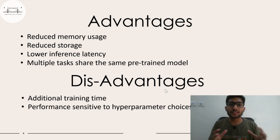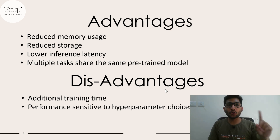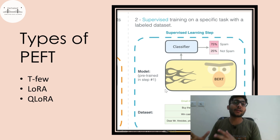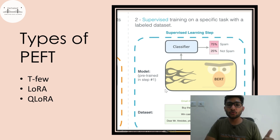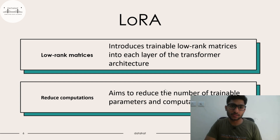We are going to see two primary types of PEFT-based techniques for fine-tuning large language models. These include LoRA and QLoRA. There are multiple types of PEFT which include T-Few, LoRA, and QLoRA. In this video, we are going to talk about LoRA and QLoRA because these are the two most primarily used across the industry and they are the most efficient ones.